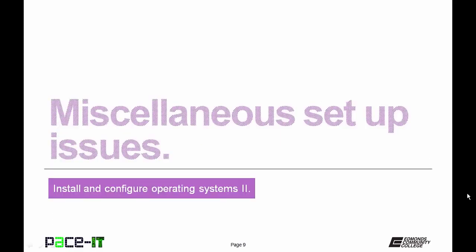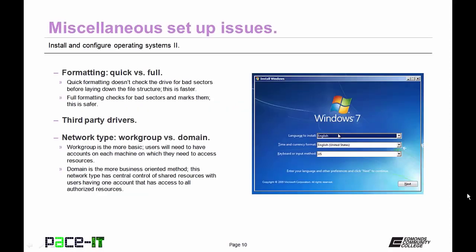Let's talk about miscellaneous setup issues. First is formatting the hard drive — quick format versus full format. In a quick format, the system does not check the hard drive for bad sectors before laying down the file structure — it's faster. The full format does check for bad sectors and marks them so files aren't placed there — it's slower but much safer. You also need to have third-party drivers on hand for any hardware installed in the machine.